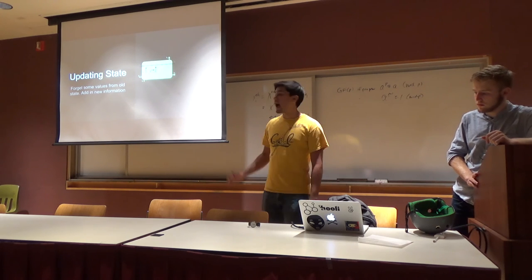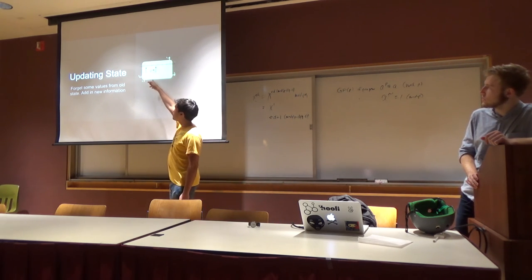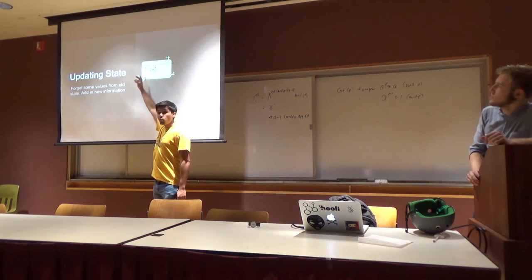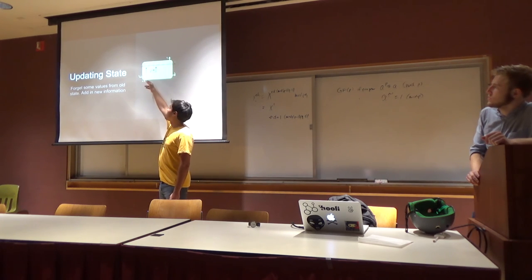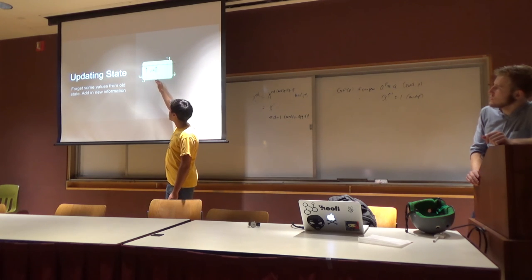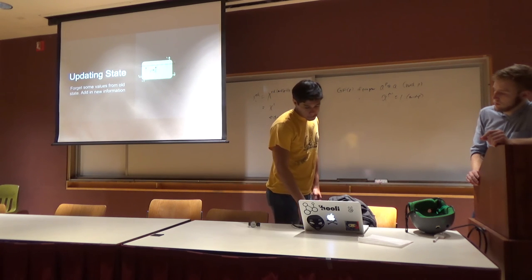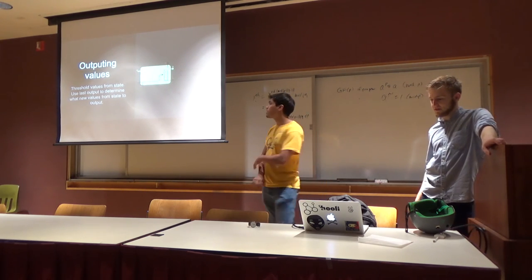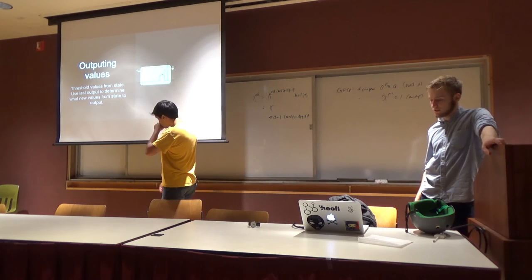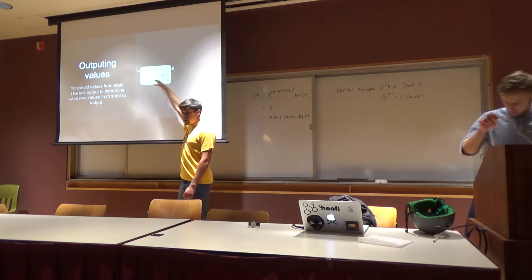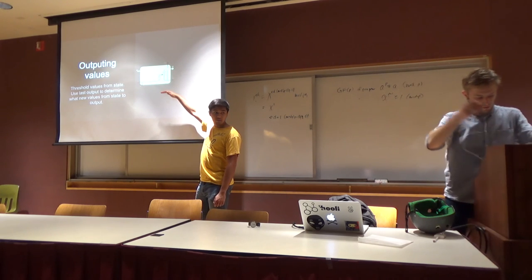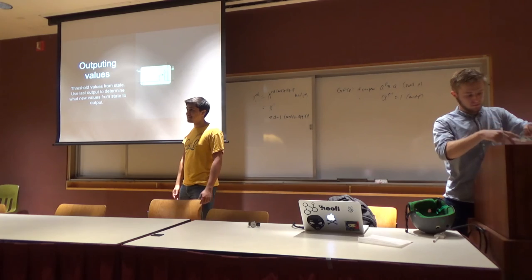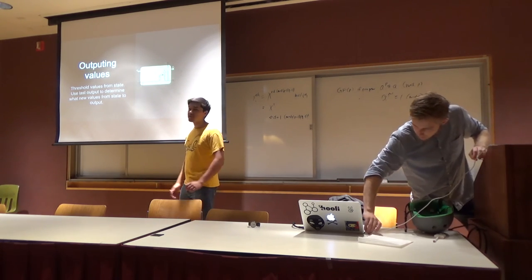Updating state: you take the sigmoid layer that was telling you what values to update and you multiply it by the values generated. Over here, the sigmoid layer is what to forget, and you multiply by that to forget information from previous iterations, then add in new information to those values. For actually outputting values, it takes the current state you just created and trains a layer that outputs what to actually do — whether to buy or sell based on the current state.